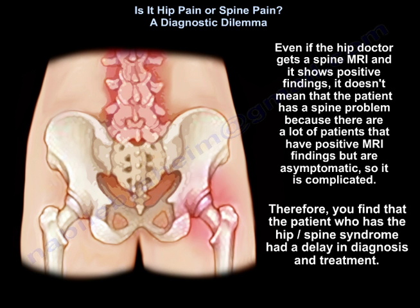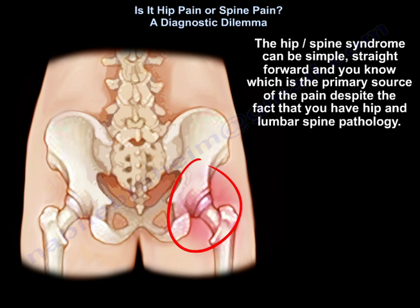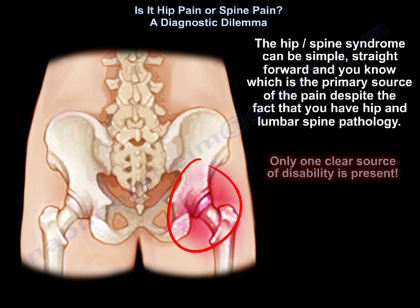Patients with hip-spine syndrome often experience a delay in diagnosis and treatment. The syndrome can be simple and straightforward — you know which is the primary source of pain despite having both hip and lumbar spine pathology, and only one clear source of disability is present.